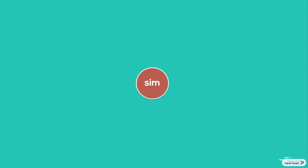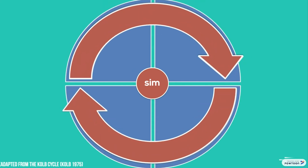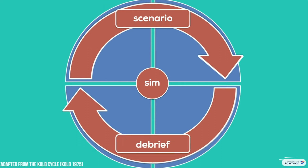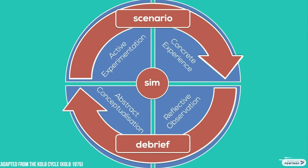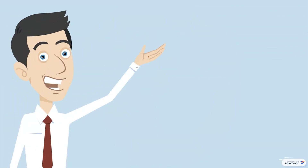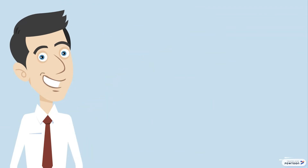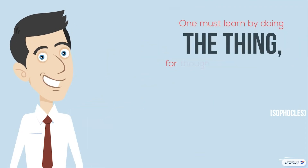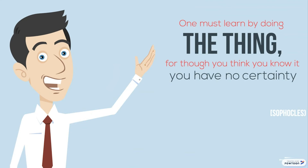Simulation is an experiential learning tool. If we map Kolb's cycle onto the simulation experience, then the scenario forms a concrete experience for the candidates. The debrief will then allow them to reflect deeply on the experience and precipitate greater understanding — the potential for behavioral change through abstract conceptualization. In subsequent scenarios, the candidates will actively experiment with their new knowledge, and so the cycle rolls on. Experiential learning is not a new thing; in ancient Greece, Sophocles stated: 'One must learn by doing the thing, for though you think you know it, you have no certainty until you try.'